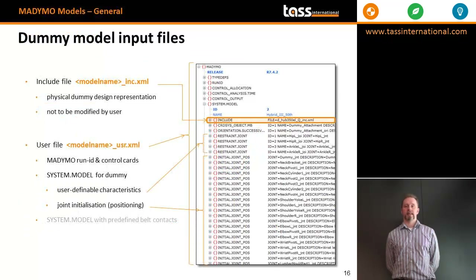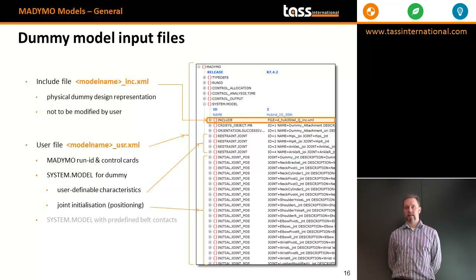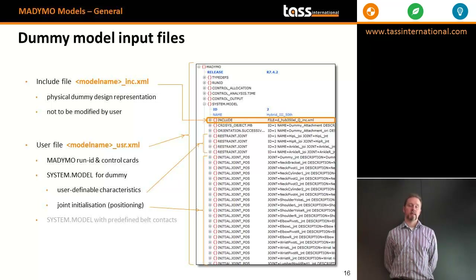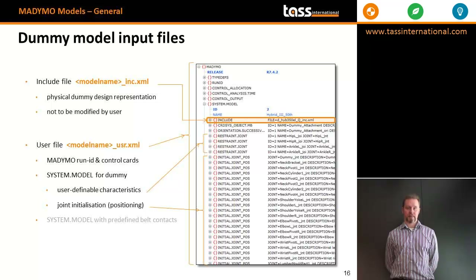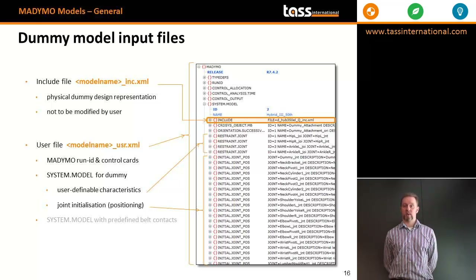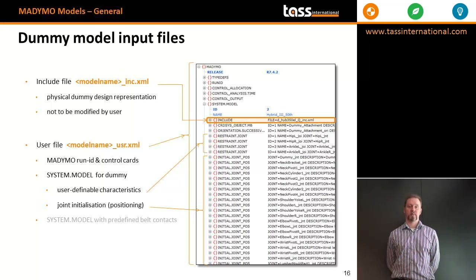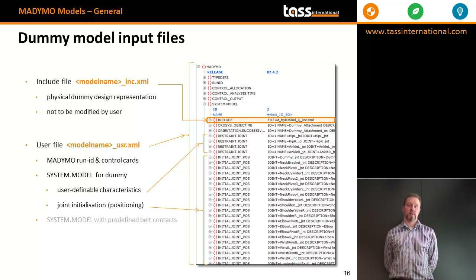Each dummy is provided in the form of two input files: an include file and a user file. The include file contains all data of the complete dummy — the multi-body chain, the constraints, and the output requests — and is not intended to be modified by the user. The user file contains the run ID, the control cards, and any user-definable characteristics such as joint initialisation, positioning and locking, and any additional output that may be required.